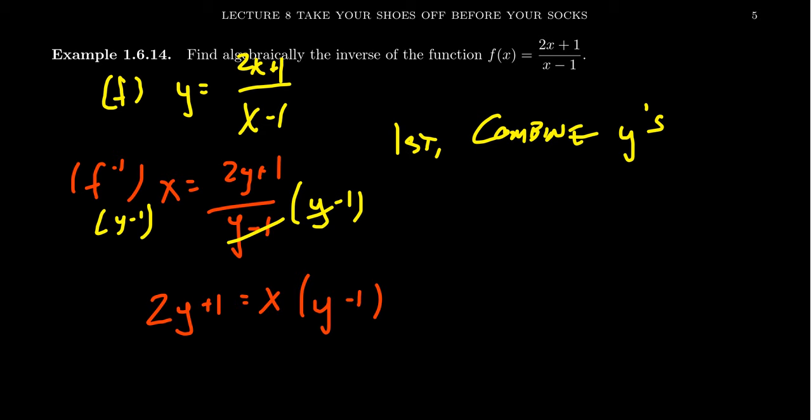This then will give us 2y plus 1 equals x times y minus 1. Now we're in a slightly different predicament than we were a moment ago. In this situation, we have a y imprisoned inside of these parentheses here. The guard keeper, of course, is the multiplication by x. Previously, I told you not to multiply it out because that would spread out the y. On the other hand, though, since the y's are already spread out, in order to combine them together, we need to liberate them. And that's only going to happen if we distribute the x. It almost seems like I'm giving you different advice. In one situation, I told you not to multiply it out. But in a different situation, I told you to multiply it out. Why the important difference?